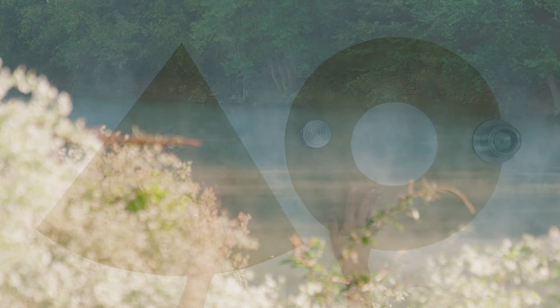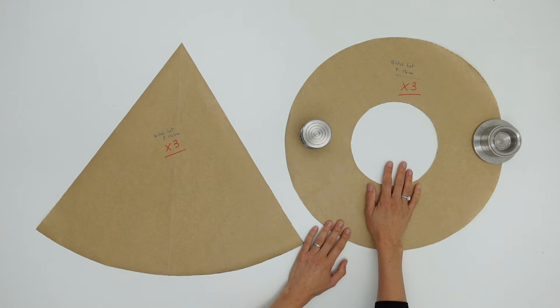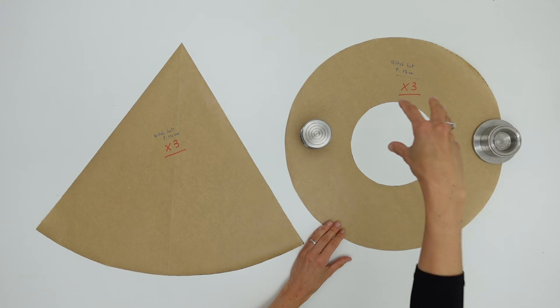Here is a quick look at what the finished pattern will look like. We will have a piece that looks like a big pancake with a hole in the middle to accommodate our head, and this triangle with a round base which will turn into a cone to create the top of the hat.